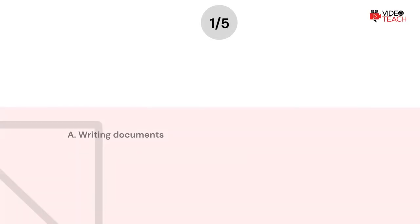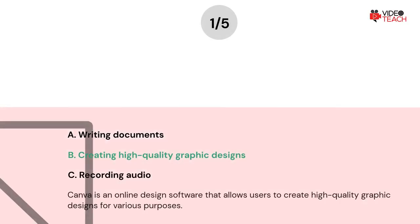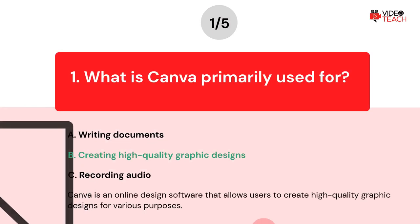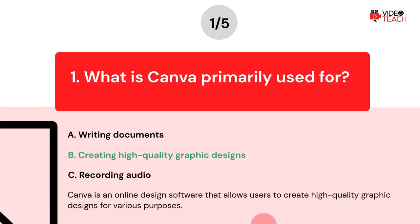The correct answer is Option B. Canva is an online design software that allows users to create high-quality graphic designs for various purposes.